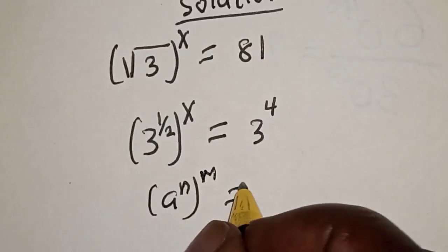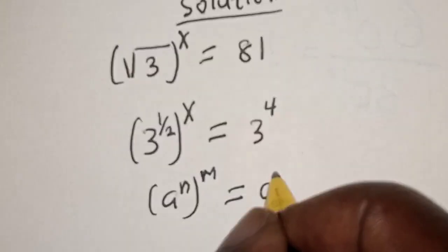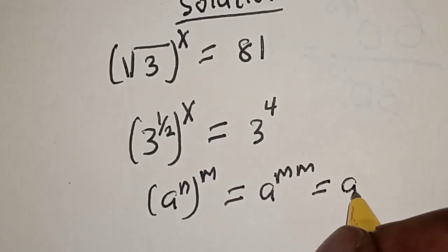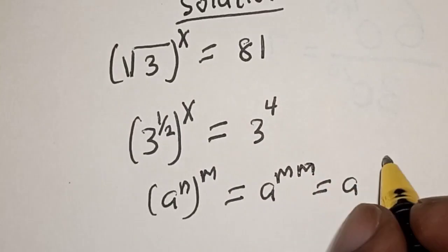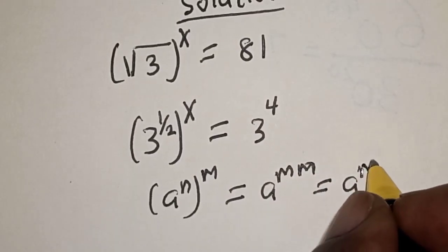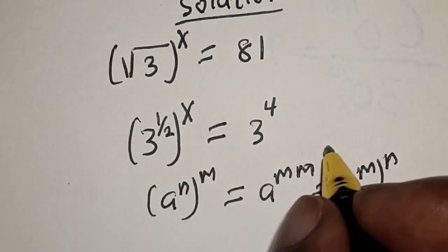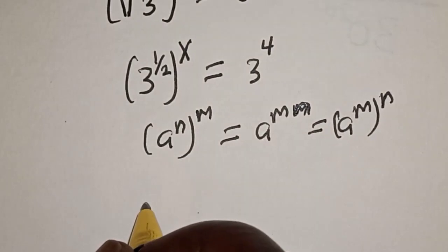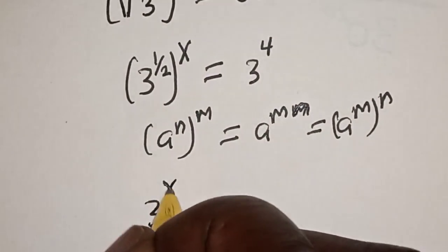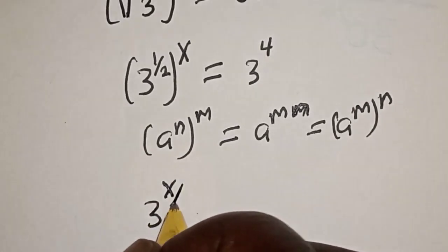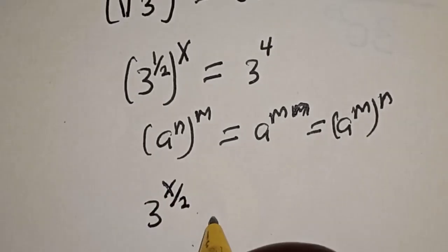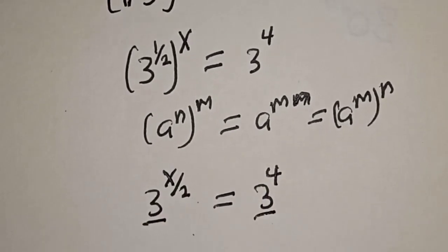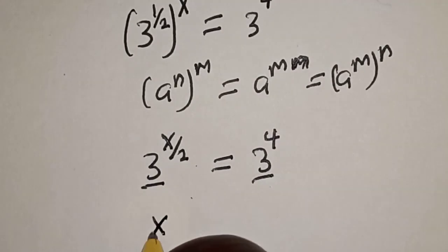...that equals a raised to power n times m. Applying this rule, 3 raised to power 1 over 2, raised to power s, becomes 3 raised to power s over 2, which is equal to 3 raised to power 4.